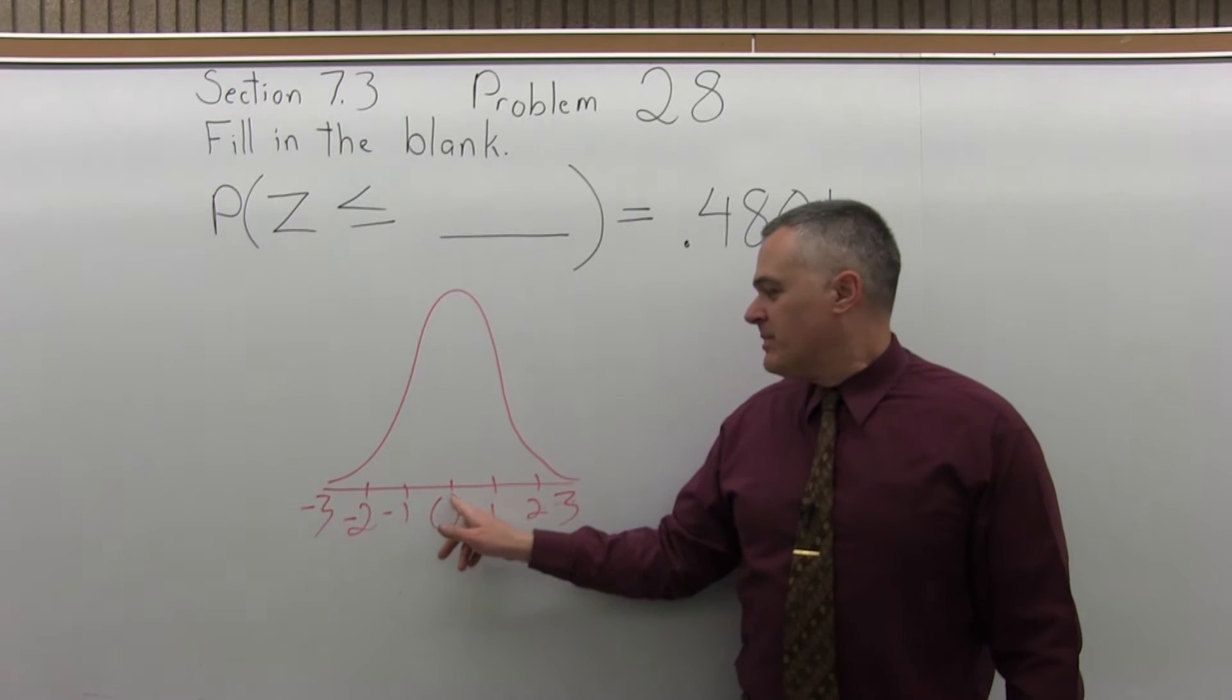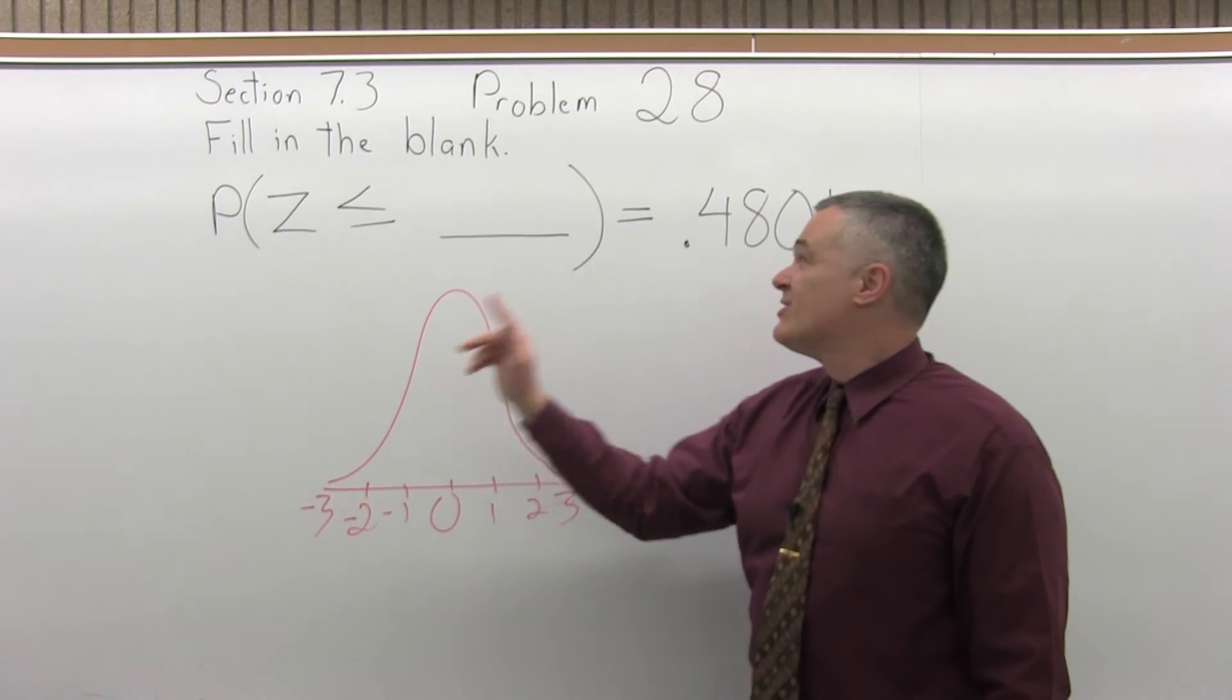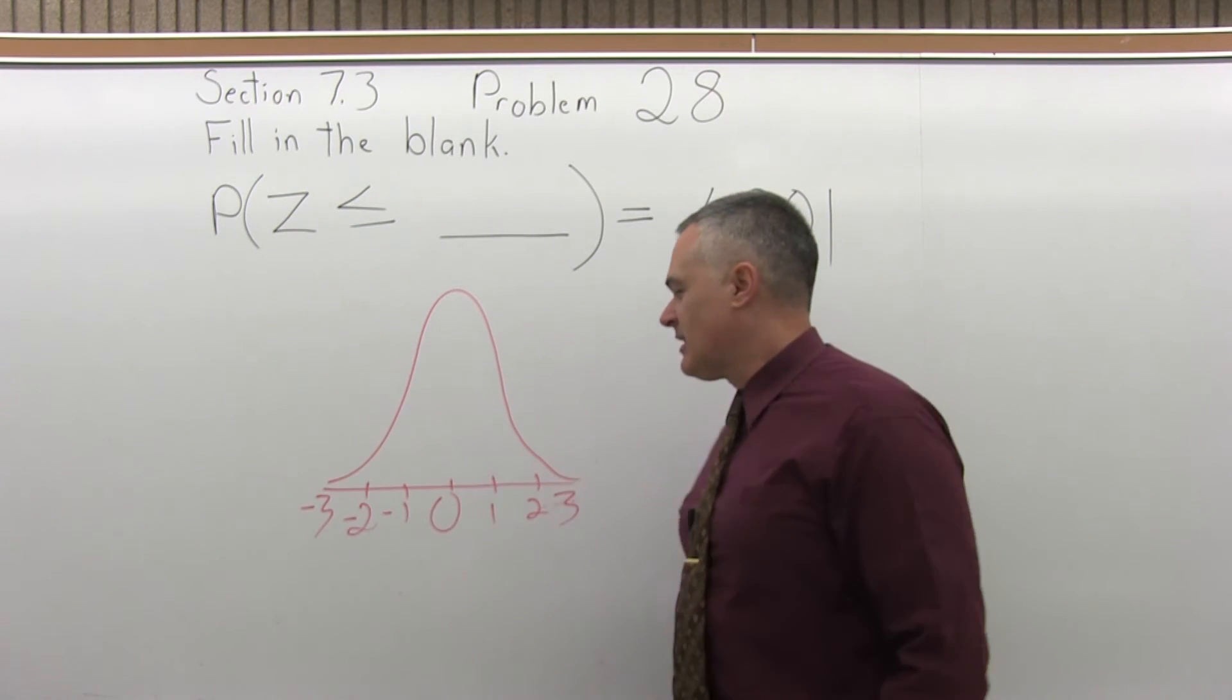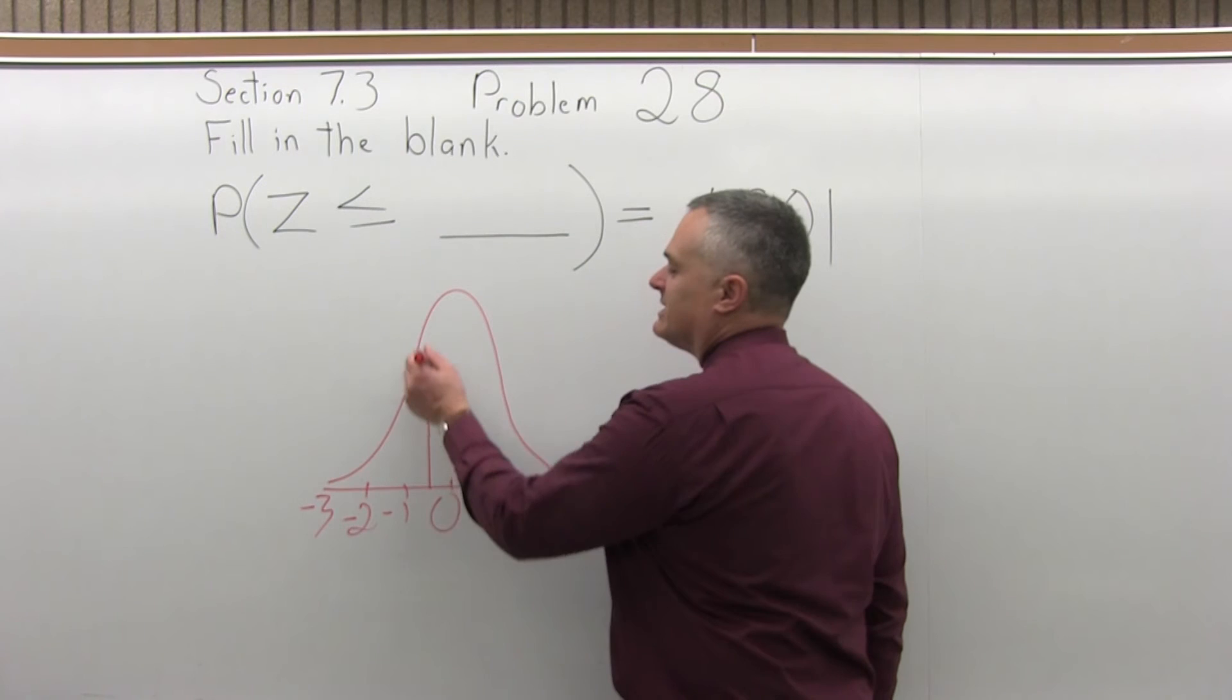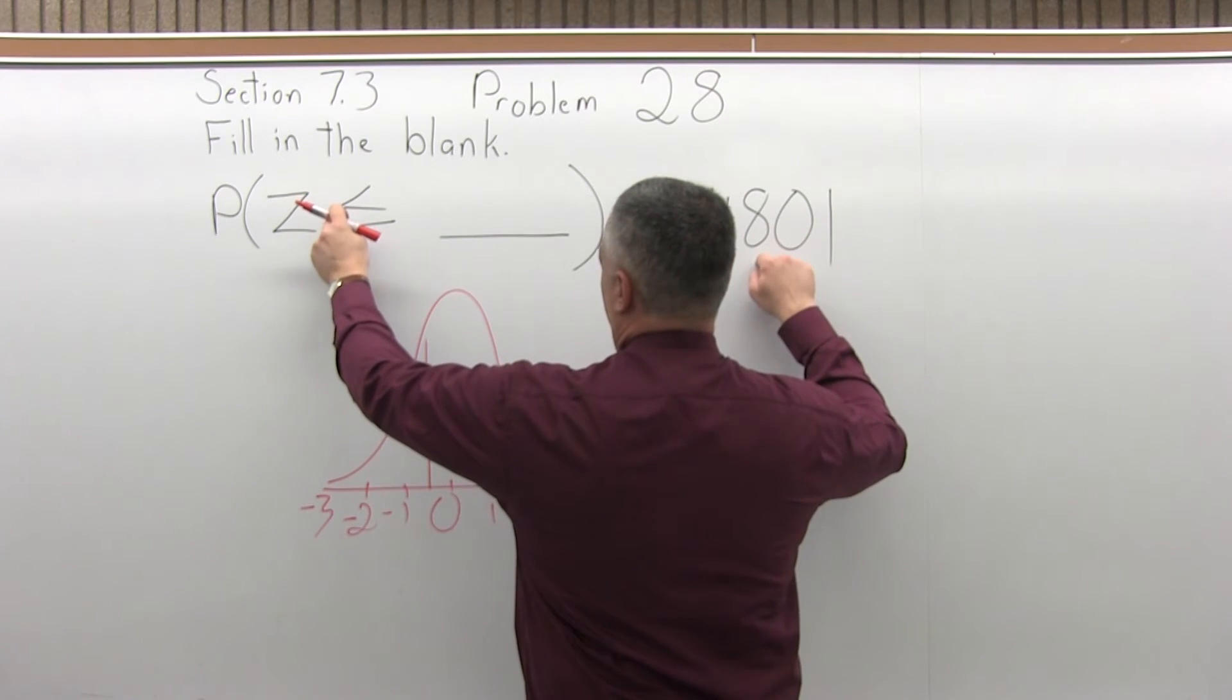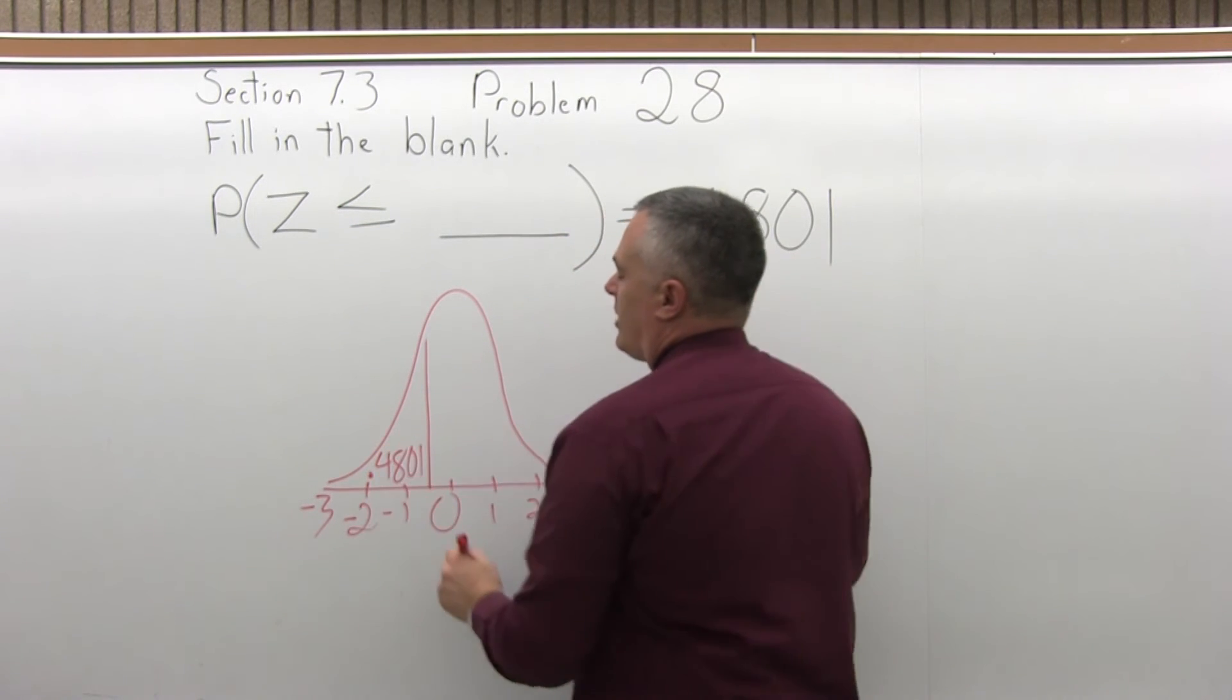I know if I start right in the middle, the probability of being less than the middle is .5. So .48 is a little less than .5, so it's going to be a little further to the left, but pretty close to the middle. Let's say somewhere here. So the probability of being to the left of that, or the less than side, is .4801.